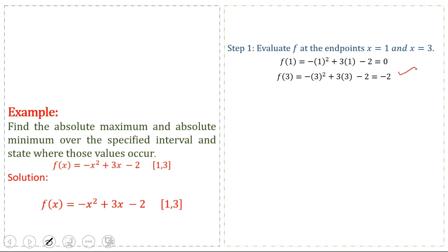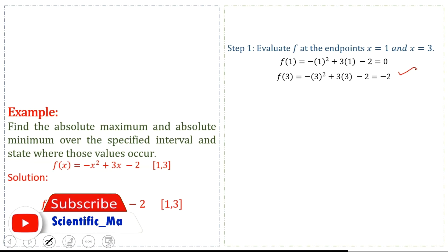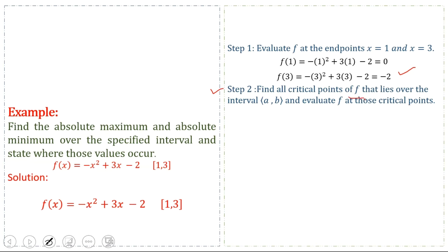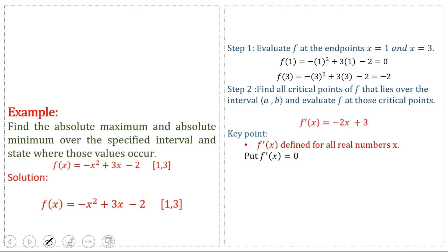Next, we find all critical values and evaluate the function at those critical points. Step 2: Find all critical points of f that lie over the interval (a, b) and evaluate f at those critical points. We take the derivative of the function: f'(x) = -2x + 3. The derivative f'(x) is defined for all real numbers x, so we set f'(x) = 0 and solve for x to find the critical value.